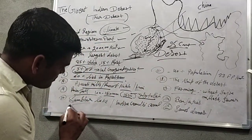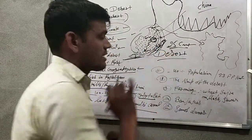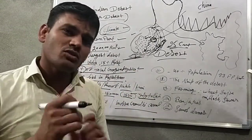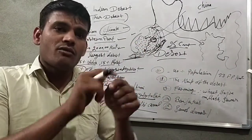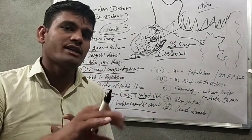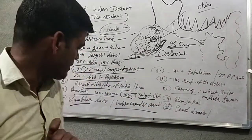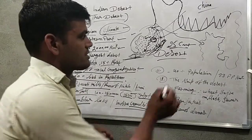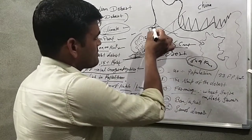Sambhar Lake is also located here in Rajasthan. When rain falls, water gathers there forming a lake. We also have the Indira Gandhi Canal. The Indira Gandhi Canal stretches 649 km in Rajasthan and is located in the western part of Rajasthan.